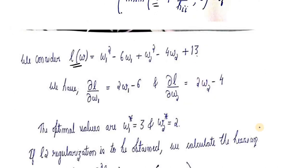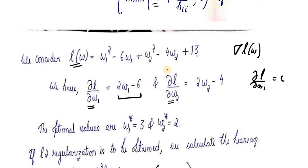We consider a loss function L(W) made up of two parameters W1 and W2. We first find the gradient of L(W). Differentiating with respect to W1 gives 2W1 − 6, and with respect to W2 gives 2W2 − 4. Equating these to 0, we get W1* = 3 and W2* = 2 as the optimal values.